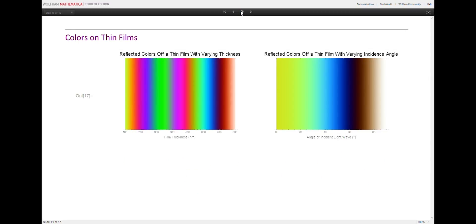For thin films, which have a greater refractive index than the air, we can show the color reflected off a thin film as a function of the film's thickness. Likewise, we can see how the reflected wavelength colors vary with the incident light wave angle. Here are two plots Mathematica has generated for a thin film with refractive index 1.5.